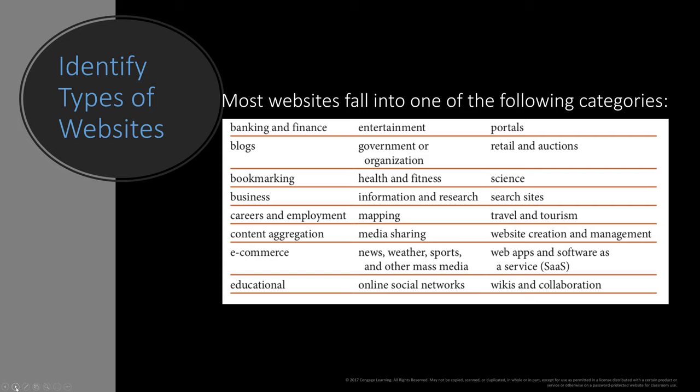We use web pages and websites for a ton of different things: banking and finance like a US bank site, blogs, bookmarking, business sites, e-commerce sites. eBay is an e-commerce site, and we'll get into more detail on the difference between eBay and Amazon. Educational sites like cocc.edu — some might say Blackboard is an educational site, but I would say Blackboard is actually an educational web service, along with Moodle and similar platforms.